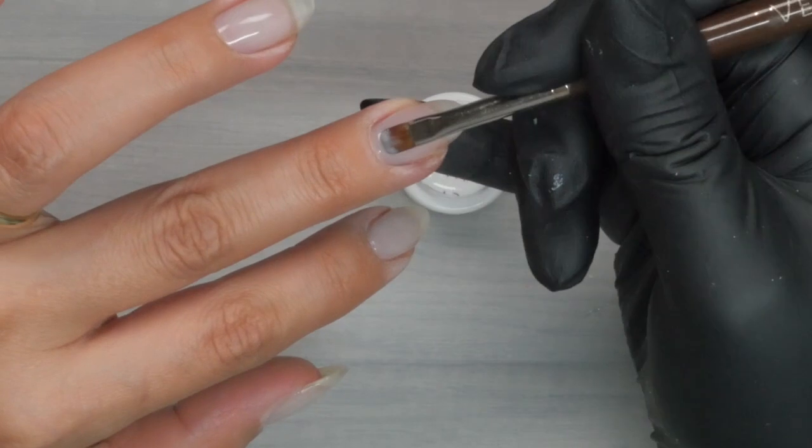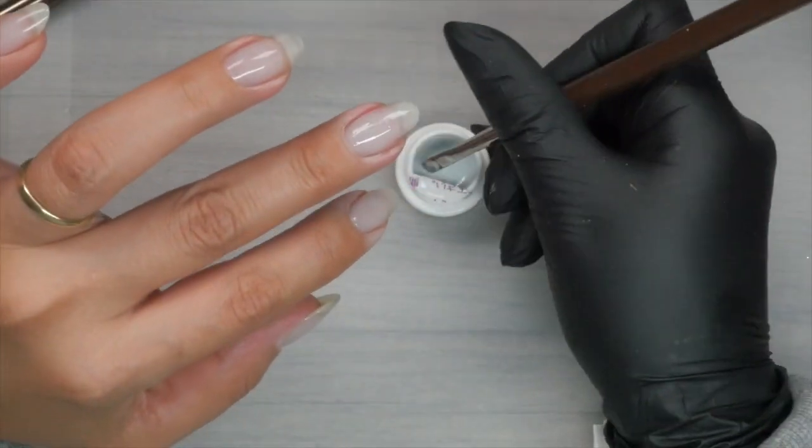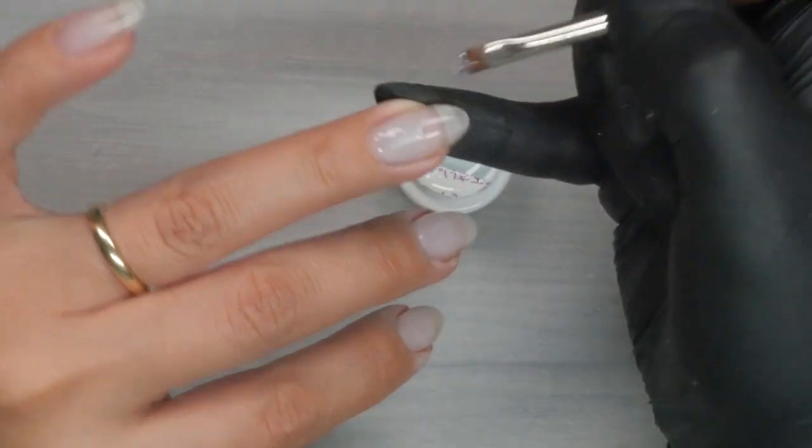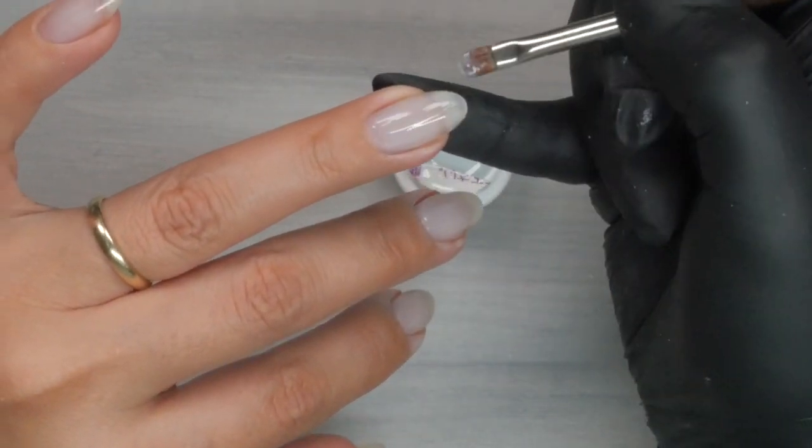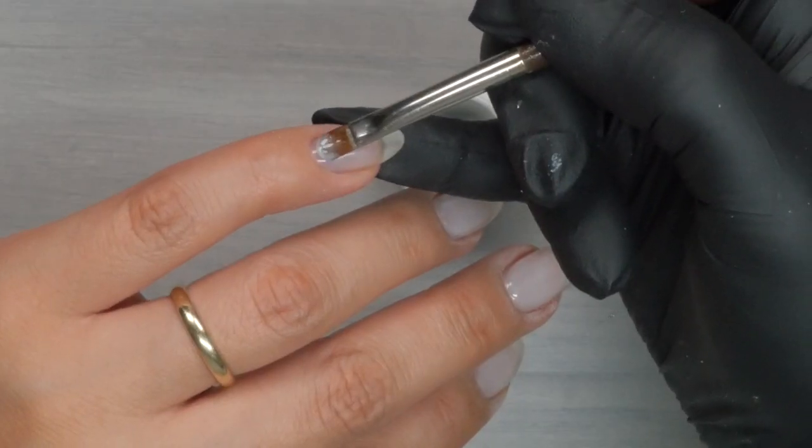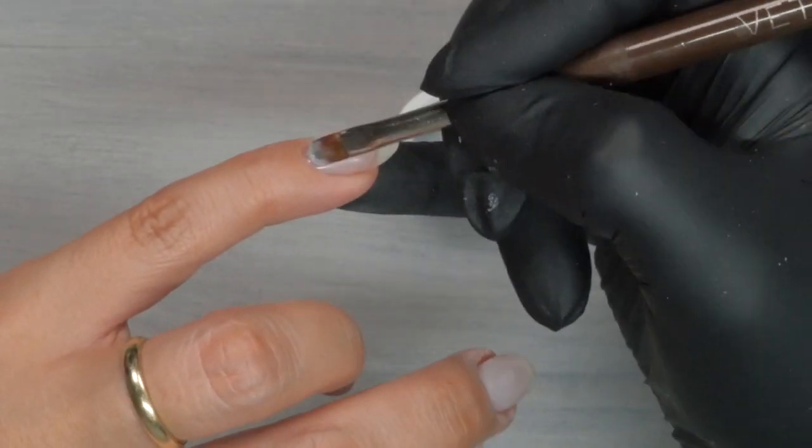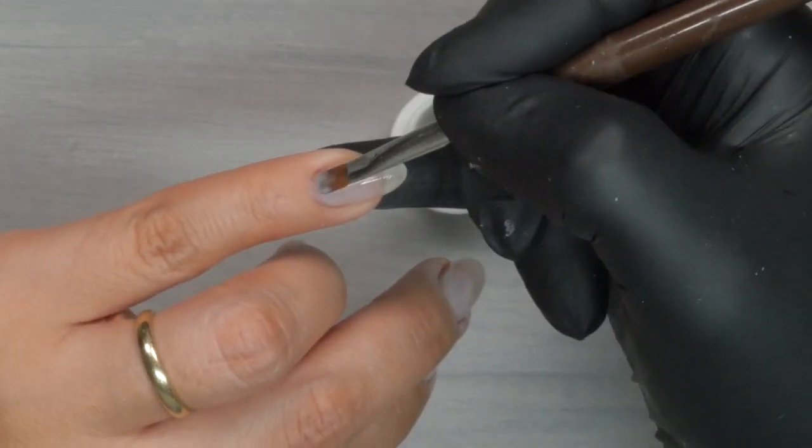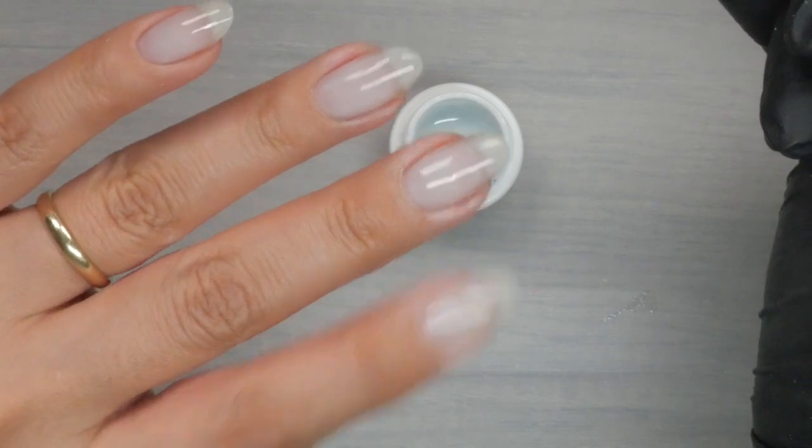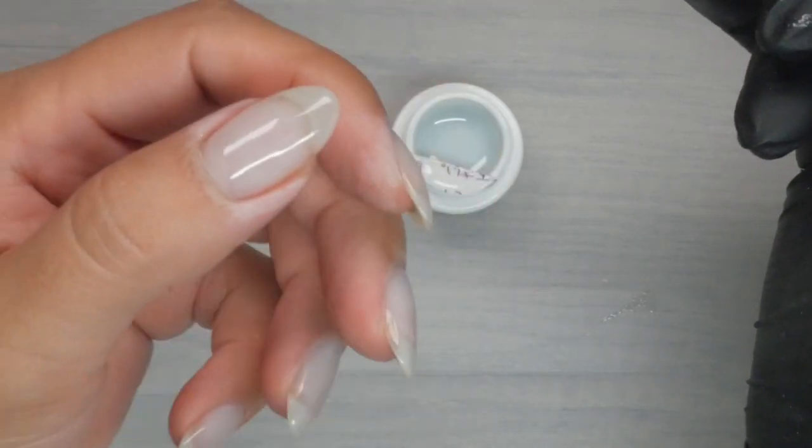I'm going to apply one coat of this gel. I ended up doing just one because I was afraid that it was going to be too blue. And not only that, I'm going to be layering. So when you're layering, you kind of want to start thin. So once I'm done applying, I'm going to go ahead and fully cure.